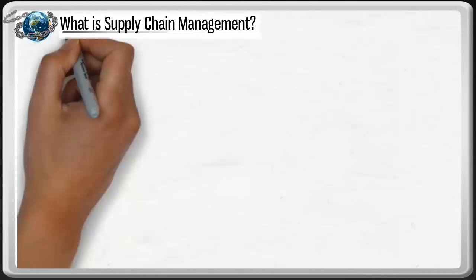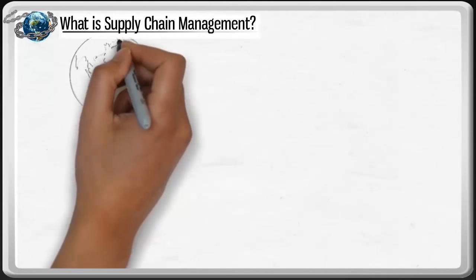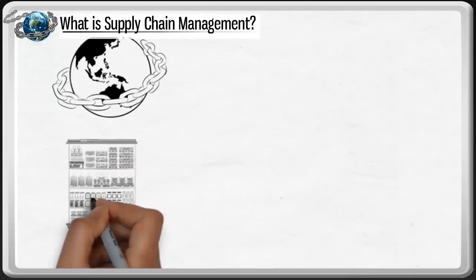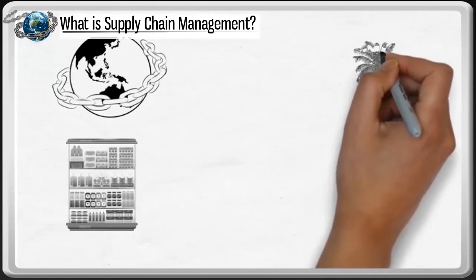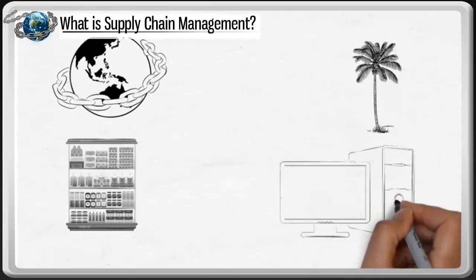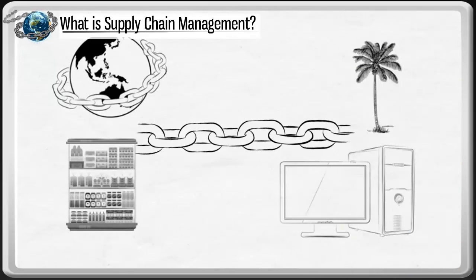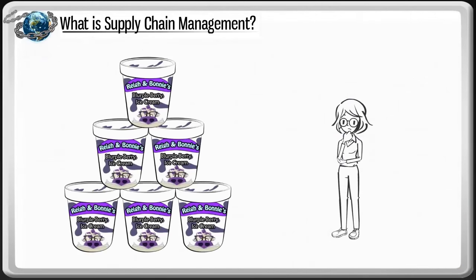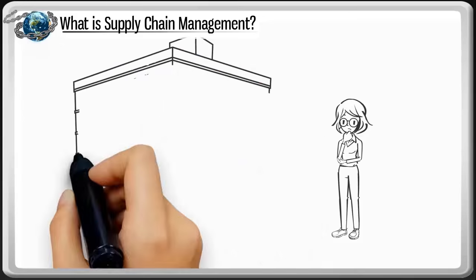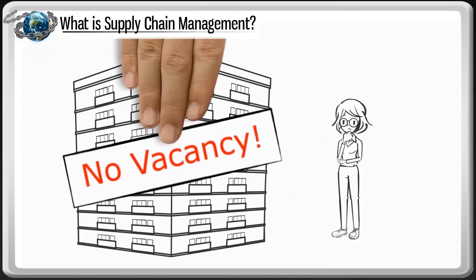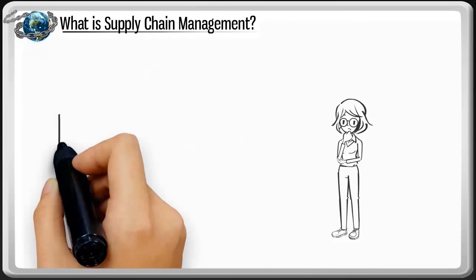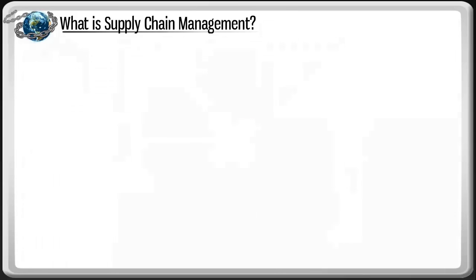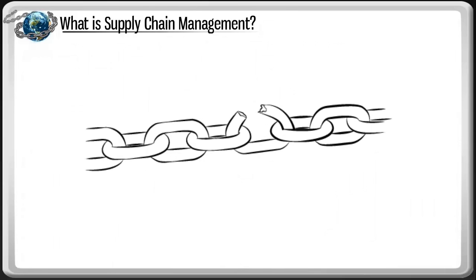The global supply chain is all around us, from stocking the shelves in your local grocery store, to securing your weekend getaway hotel, to ordering online from your favorite website. All of these tasks require the global supply chain. When your favorite ice cream isn't on the store shelf, your vacation gets canceled, or your favorite website can't get your products, it's called a breakdown or missing link in the chain of supply.